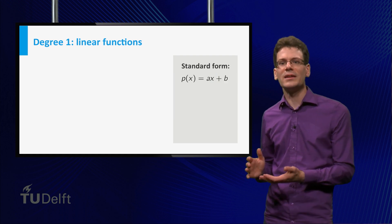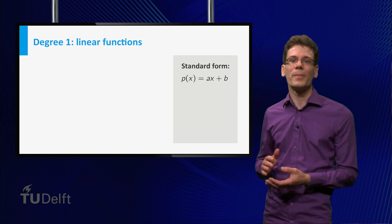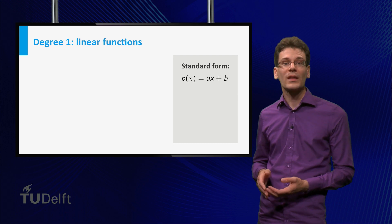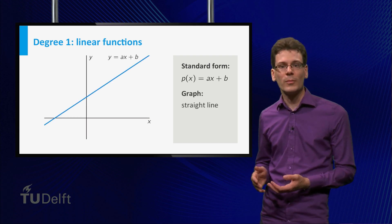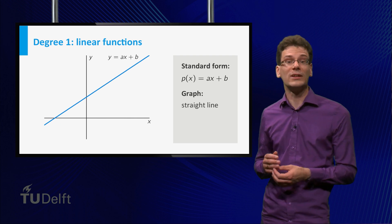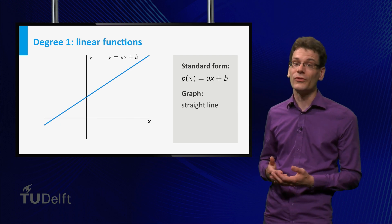Let's make this a bit more exciting by passing to degree 1. Degree 1 polynomials have the form p(x) equal to ax plus b, where a and b are constants. The graph of a degree 1 polynomial function is a straight line, and that's why these functions are also called linear functions. By the way, constant functions are also examples of linear functions.